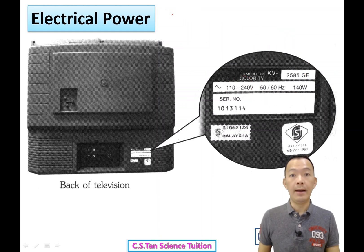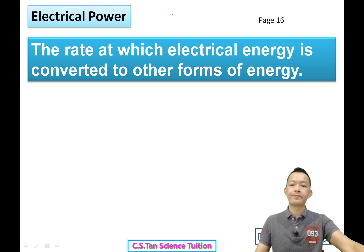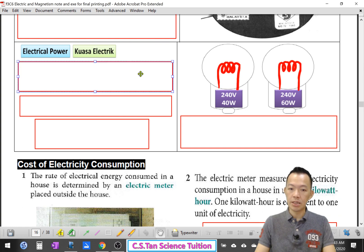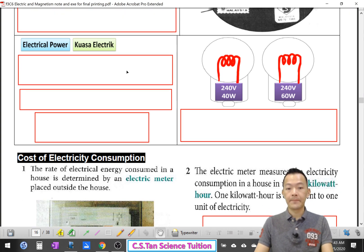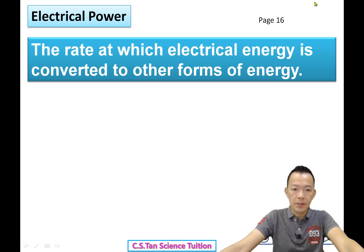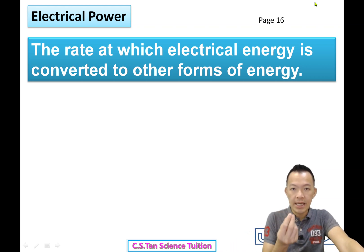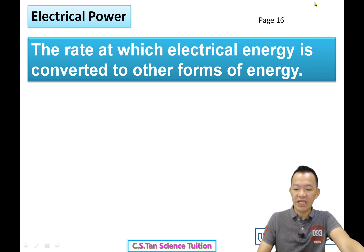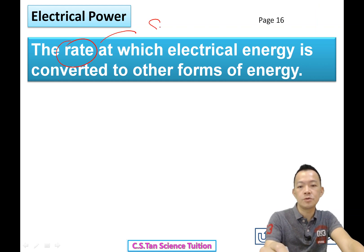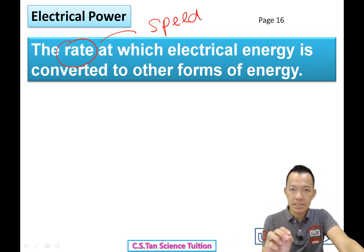Page number 16 — let's copy the definition of power. Power is the rate at which electrical energy is converted to other forms of energy. 'Rate' just means speed — how fast the electrical energy can be converted into other forms of energy.